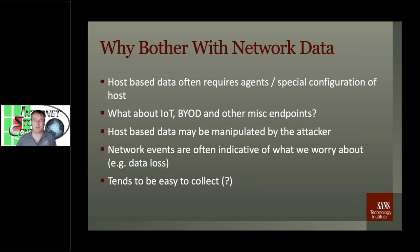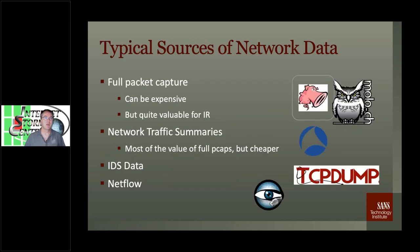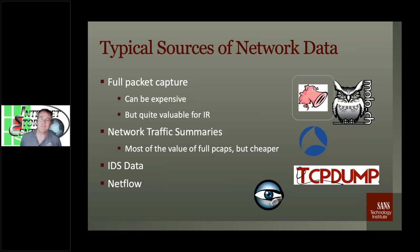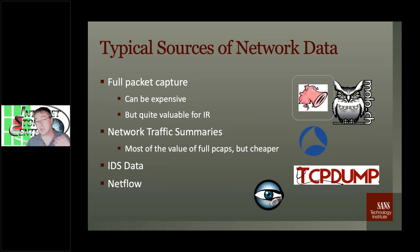What kind of network data do we typically have? The gold standard — the network data I like the most — is full packet captures. If you don't have packets, it didn't happen. Really valuable for incident response: show me all the traffic going to and from that host for the last six months. But there's a cost associated with this. If you can't get full packet captures, the next level down is some summaries. Zeek is a big example — it's not full PCAPs but it's pretty close, telling you everything that's happening.